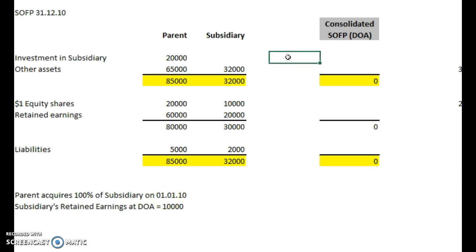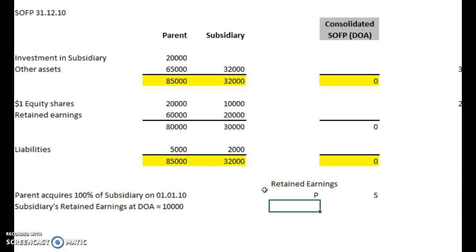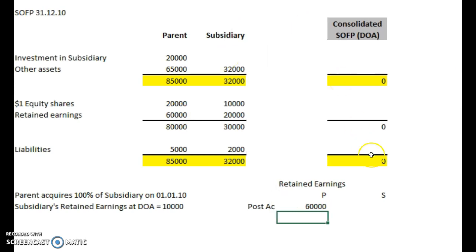First of all we need to work out the retained earnings — that's our first step. Because this figure here, 20,000, will have included some of the earnings pre-acquisition which we don't want to include in our consolidated statement. So let's do a little working here. We'll do retained earnings with two columns: one for the parent and one for the subsidiary. This is post-acquisition. Post-acquisition retained earnings of the parent is 60,000, and post-acquisition of the subsidiary is 20,000.